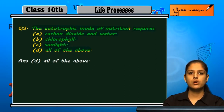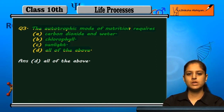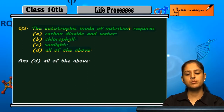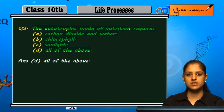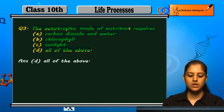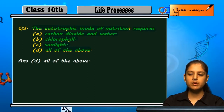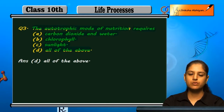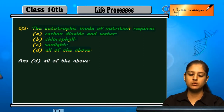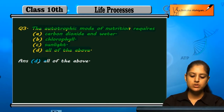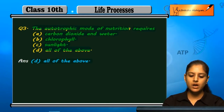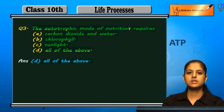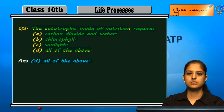The autotrophic mode of nutrition is required in the photosynthesis process. Carbon dioxide, water, chlorophyll, and sunlight are all required. So all of the above are required in autotrophic nutrition.